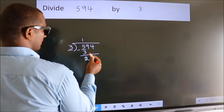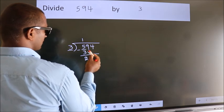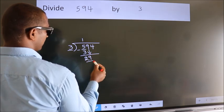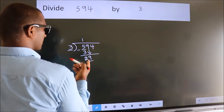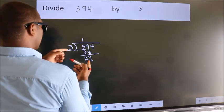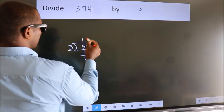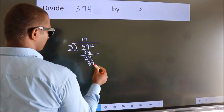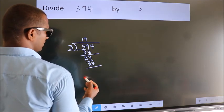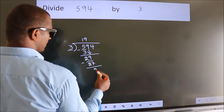After this, bring down the beside number. So 9 down, making 29. A number close to 29 in the 3 table is 3 nines, 27. Now we subtract. We get 2.